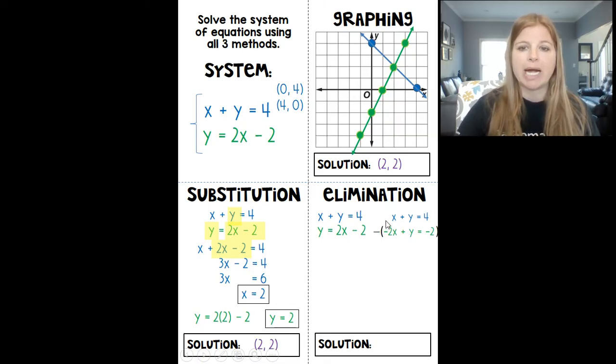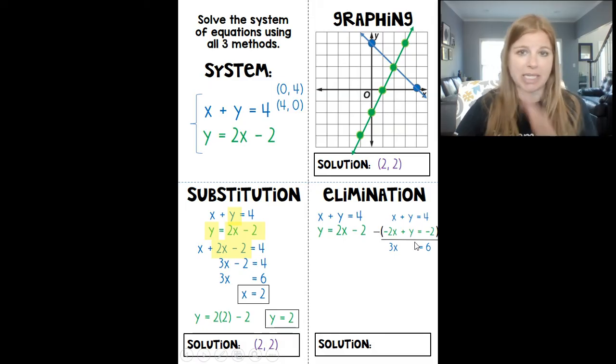So what I need to do is subtract the entire second equation. So I put a minus sign here, parentheses around the entire second equation. We can go ahead and do the math. x minus a negative 2x really means x plus 2x, which is 3x. y minus y, that's gone. And then 4 minus a negative 2 really means 4 plus 2, which is that 6. And this should look very familiar because we had 3x equals 6 here, which then leads me to x equaling 2 when I divide both sides by 3.